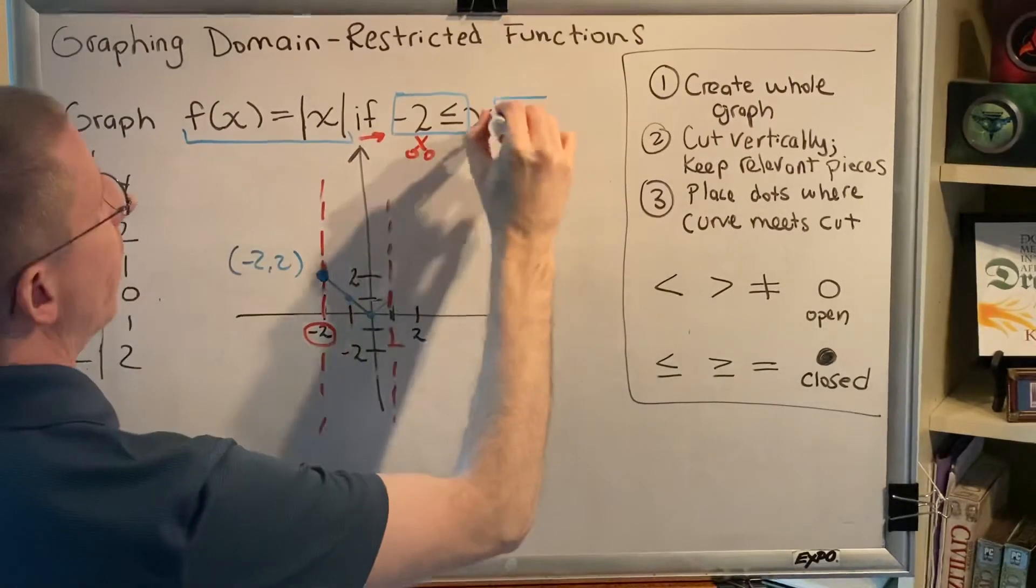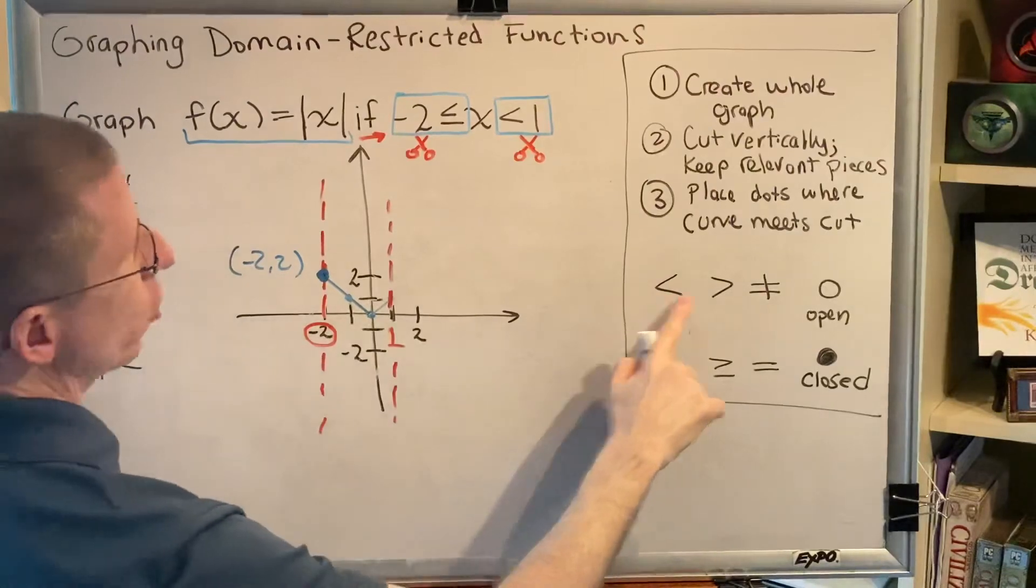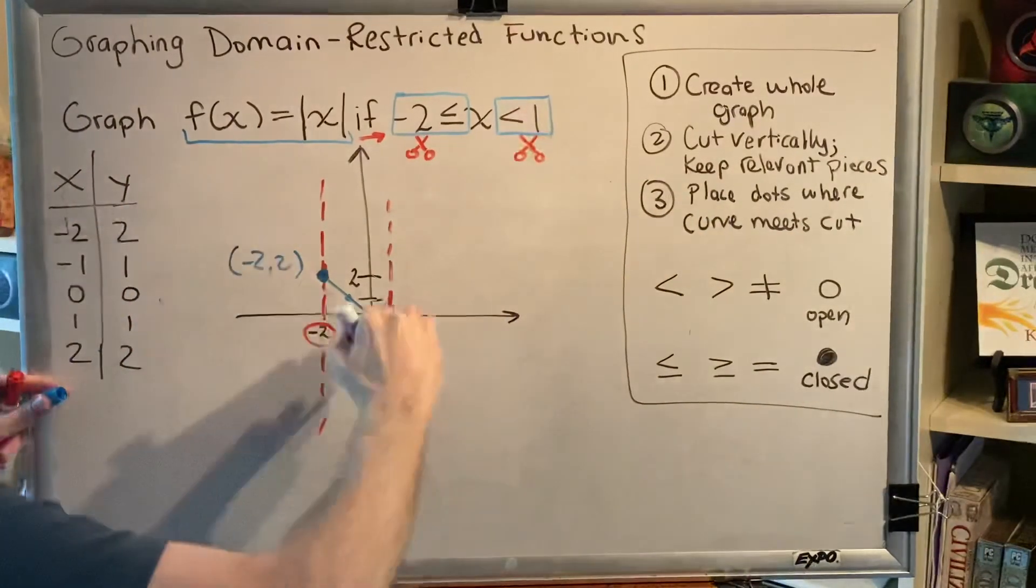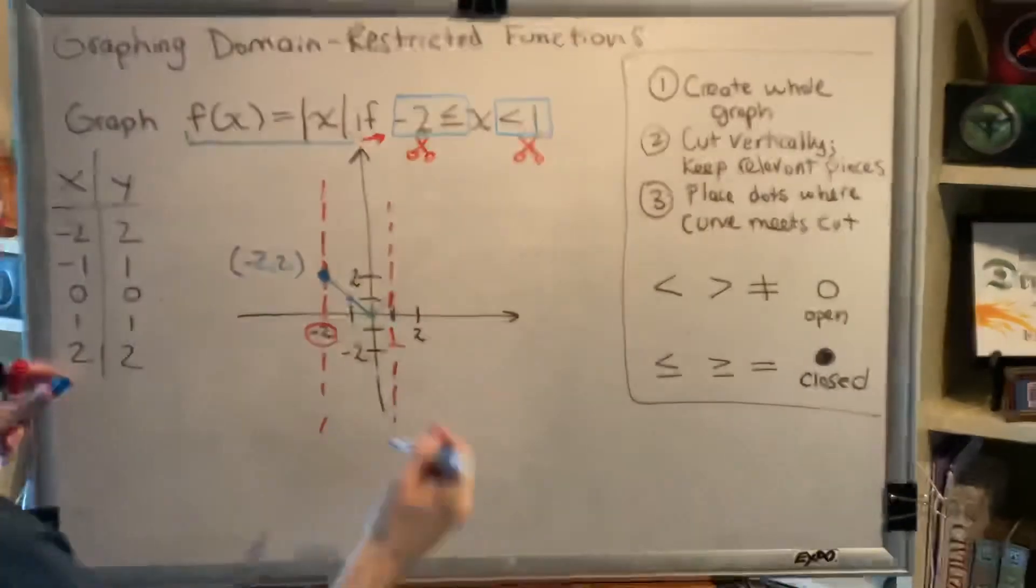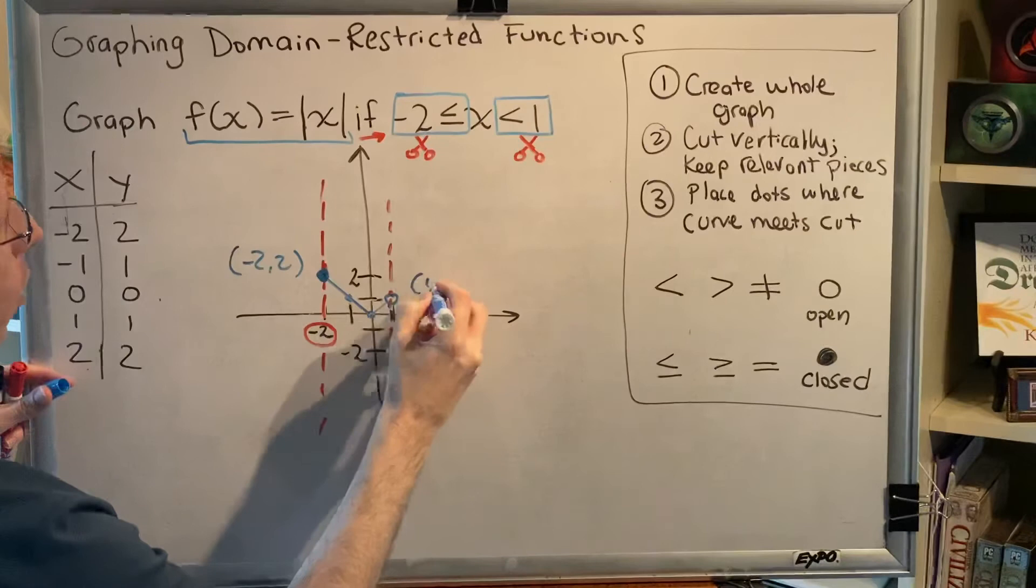Next, I find that the 1 is next to the less than symbol, which shows up in here. So I need an open dot at 1, where the blue curve meets the red cut. So that will be right here at coordinates 1, 1.